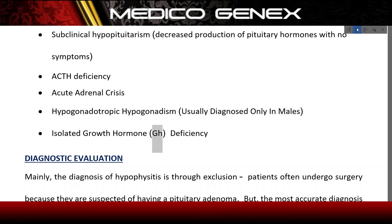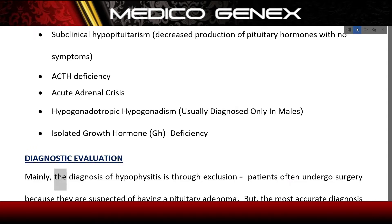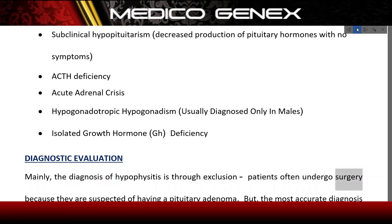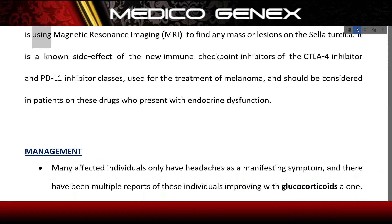Diagnostic evaluation: the diagnosis of hypophysitis is mainly through exclusion. Patients often undergo surgery because they are suspected of having a pituitary adenoma, but the most accurate diagnosis is using magnetic resonance imaging (MRI) to find any mass or lesions on the sella turcica.